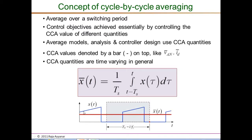This concept is illustrated with a figure: X(t) is a switching signal, and to find its CCA at a point marked by the red dot, we take the integral over one complete period T_S before that instant and divide by T_S. In this figure the average appears constant because X(t) repeats every cycle. Note that CCA quantities can be time-varying — X-bar(t) is a time-varying quantity even though it is an average over one period.